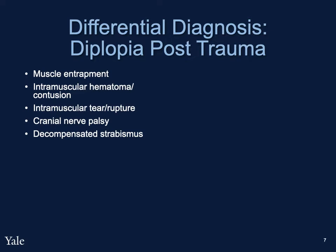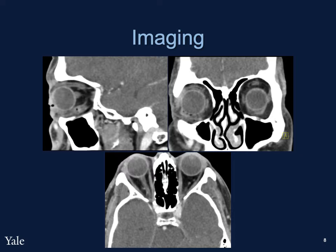While in the emergency room, the patient had a CT scan of the orbit, which showed no evidence of globe rupture, retrobulbar hemorrhage, or orbital wall fractures. There were multiple small foci of gas and a small amount of edema noted in the right orbit inferior to the right globe.